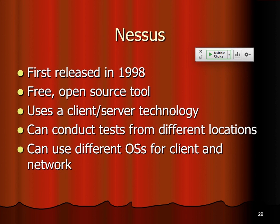A Nessus scan takes a long time — like an hour — because first it does a port scan to find open ports, then it tests a long list of vulnerabilities. It basically has the CVE list. After it gets a banner that this is some kind of FTP server, it hunts for the attacks that might work against that server and tests them all. It doesn't do the whole CVE list, but it does a large portion of it, which is why it takes hours. It can also flood your network and cause problems.